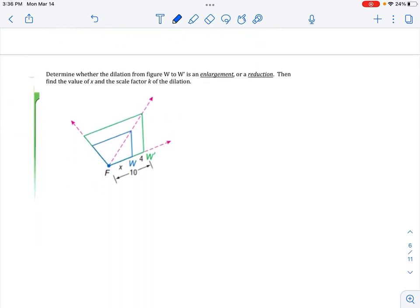On this next one, we are going to determine whether the dilation from the figure W to W' is an enlargement or a reduction. Remember, K is bigger than 1 if it's an enlargement, and K is less than 1 if it's a reduction. Then we'll find the value of X and the scale factor, or the K value. So notice you have this shape here, W, and then you go to W'. Obviously the W' shape is bigger, so this is an enlargement.